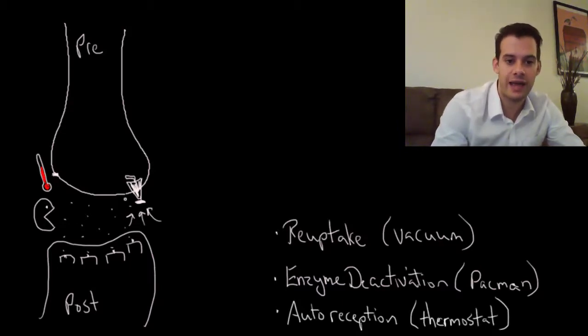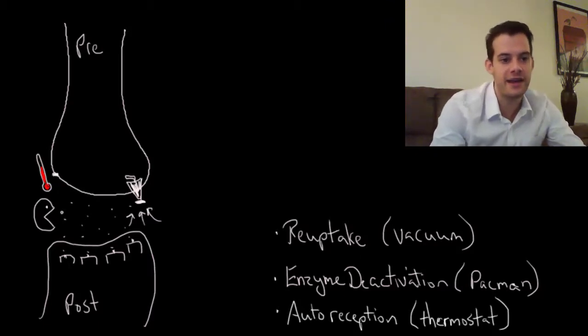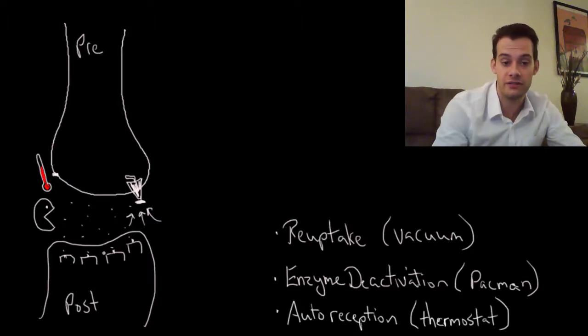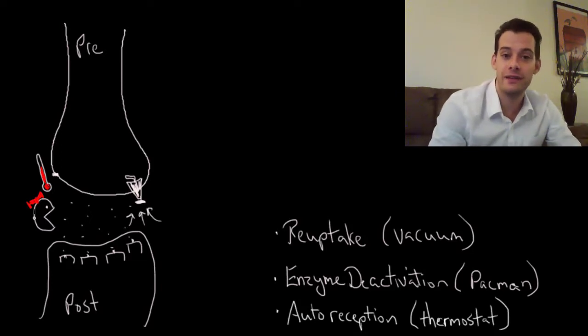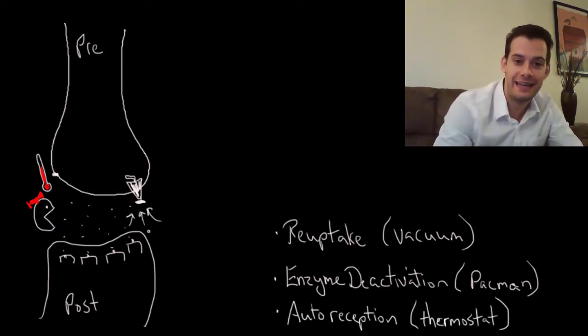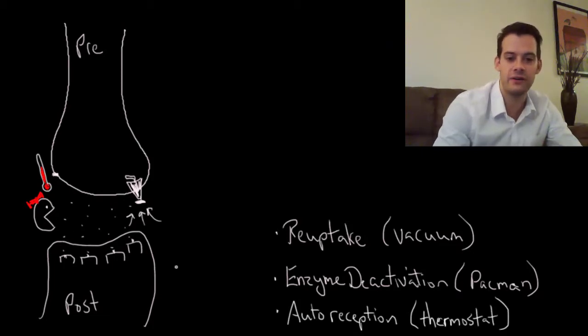This will ensure that we don't have too much there, so we have the appropriate level. Some of it's going to get taken back up by reuptake, some of it's going to get broken down by enzymes, and some of it is going to bind to postsynaptic neuron receptors. So those are our three main approaches. We have the vacuum cleaner, reuptake. We have the Pac-Man or Mrs. Pac-Man, eating up the neurotransmitter, the enzyme, breaking it down. And we have the thermostat approach, auto-reception, which is monitoring the level of neurotransmitter, ensuring that it doesn't get too high, inhibiting release of more neurotransmitter.